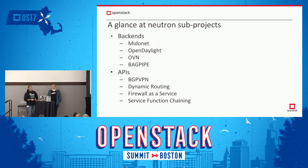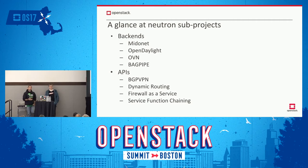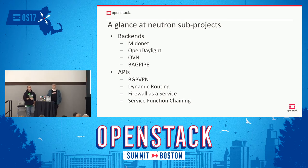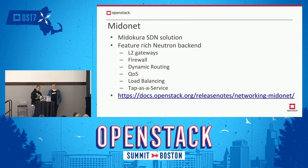Let's have a look at the Neutron subprojects we currently manage as part of the Neutron Stadium. There are backend projects and API projects. Backend projects implement the APIs available in Neutron core. We have backends like MitoNet, OpenDaylight, OVN, and Backpipe, versus APIs like BGP, VPN, dynamic routing, firewall as a service, and service function chaining.